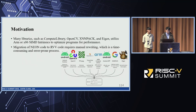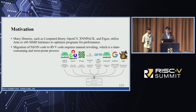Many libraries, such as Compute Library, OpenCV, XnPack, and Eigen, utilize ARM or x86 SIMD intrinsics to optimize programs for performance. If you ever try to move Neon code to RVV code, it requires manual rewriting, which is a time-consuming and error-prone process. This is where we step in. By introducing our Neon-to-RVV intrinsic migration, we believe we found a way around these challenges.